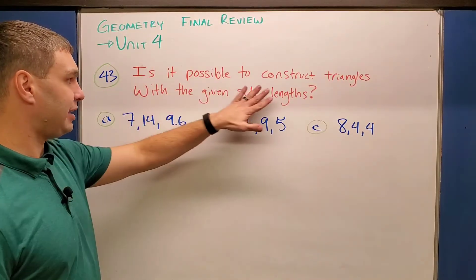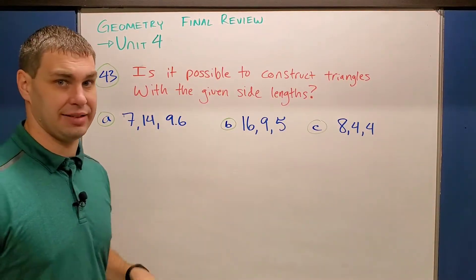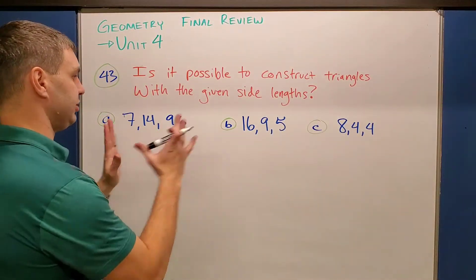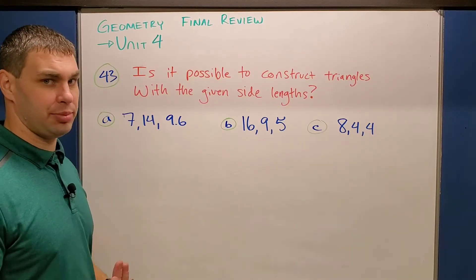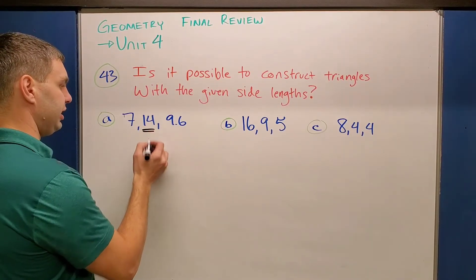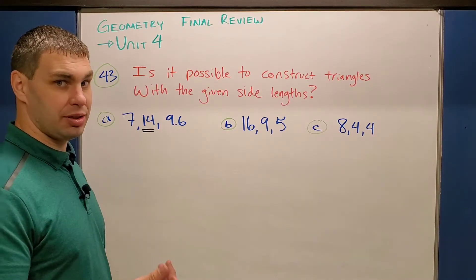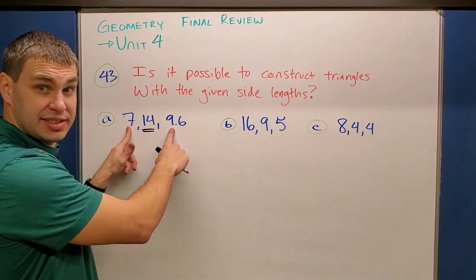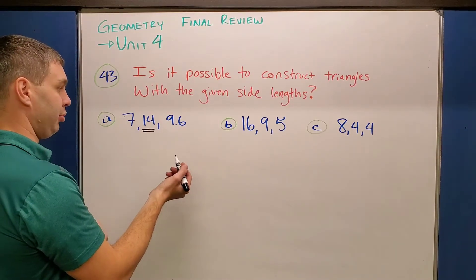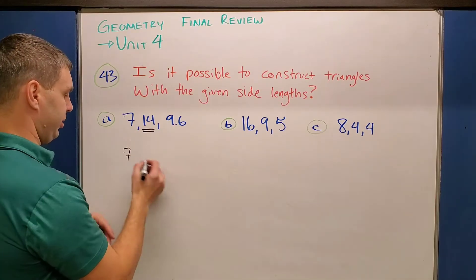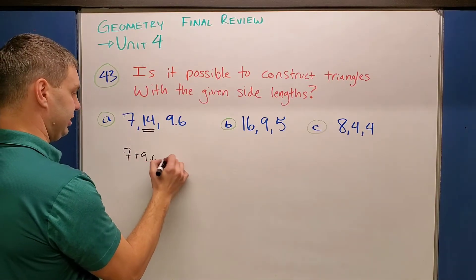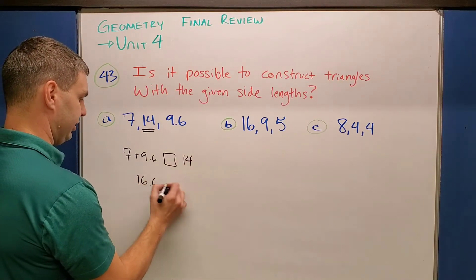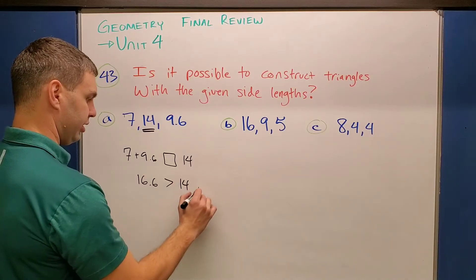This next set of problems is asking if it's possible to construct triangles with a given side length. So they're going to give you three side lengths. Triangles have three sides, right? And then to figure out if this is possible or not for A, B, and C, what you have to remember is that your largest side, so for example in this one 14, it can't be bigger than the other two sides added up. So here seven plus 9.6 is 16.6. So therefore I would say something maybe like seven plus 9.6 is 16.6, which is greater than 14. So therefore this one is okay.